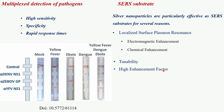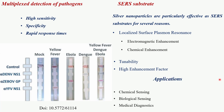Silver nanoparticle SERS substrates find applications in chemical sensing — including detection of pollutants, pesticides, and chemical contaminants — biological sensing such as identification of proteins, DNA, and pathogens, and medical diagnostics such as early disease detection through biomarker identification. Challenges include stability, as silver is prone to oxidation and aggregation, which can reduce reproducibility; achieving uniform nanoparticle distribution for consistent signals; and carefully controlling surface chemistry to maintain the enhancement factor.